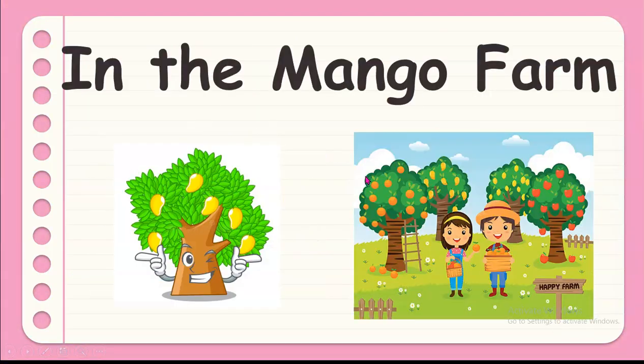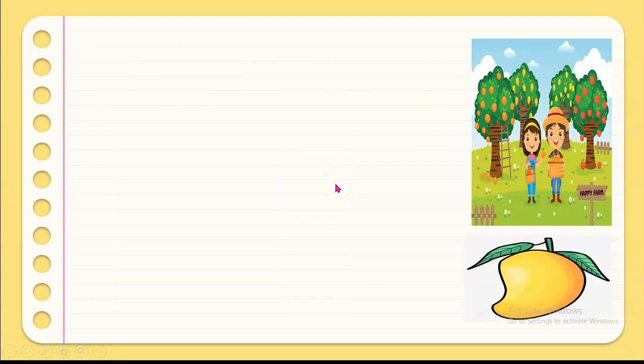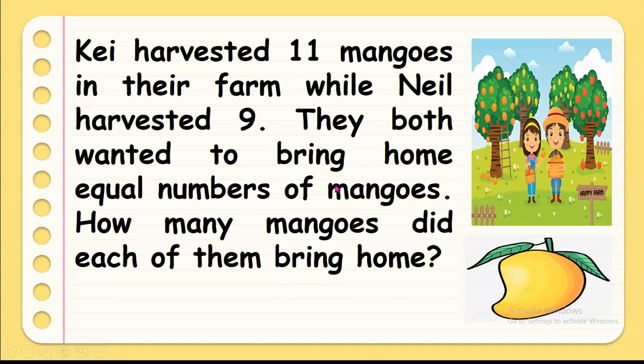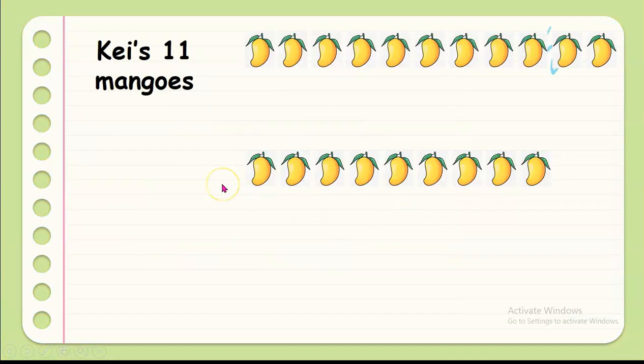And to start, we will have our story in the mango farm. Now, Kay harvested 11 mangoes in their farm while Neil harvested 9. They both wanted to bring home equal numbers of mangoes. How many mangoes did each of them bring home? And that's what we're going to find out. So let's look at the mangoes of these two boys.